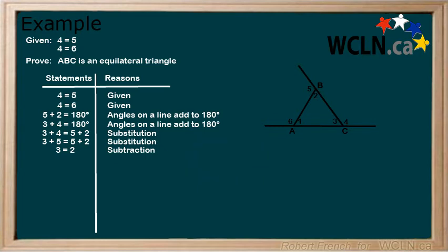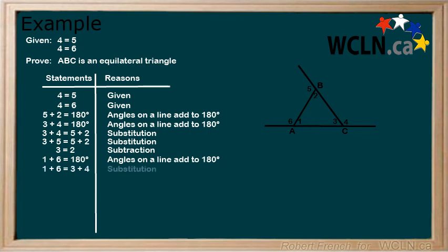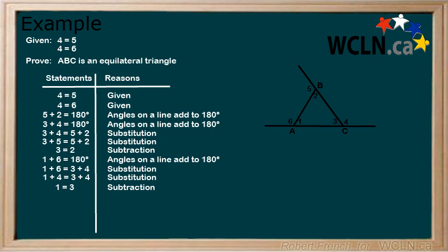Remember, we are trying to prove that angle 1, 2, and 3 are all equal. Here, we have shown two of those. Now, to find and prove that angle 1 equals angle 2 and 3: because we've already developed a strategy of substitution and subtraction that works with angles on a line, we should be able to do the same for angle 1. Angle 1 plus angle 6 equals 180 degrees. Now, replace 180 degrees by angle 3 plus angle 4 using substitution. Replace angle 6 with angle 4 by substitution — remember that we were given the fact that angle 4 equals angle 6 at the beginning. Subtract 4 from both sides to get angle 1 equals angle 3. Because angle 1 equals angle 3, we can say that angle 1 equals angle 2 by substitution.